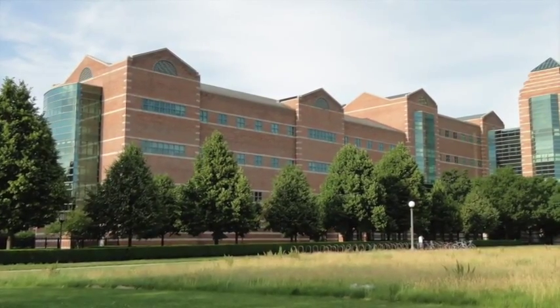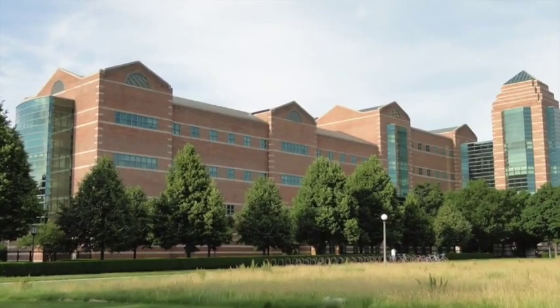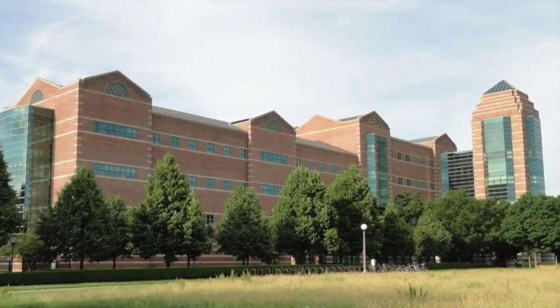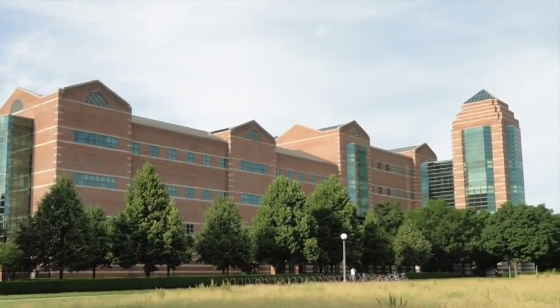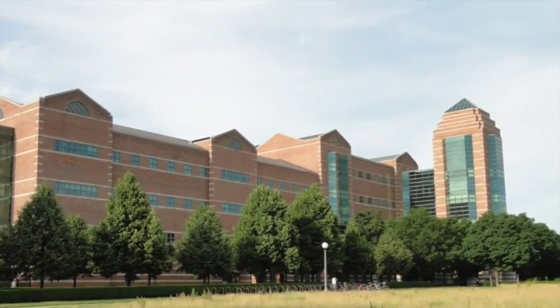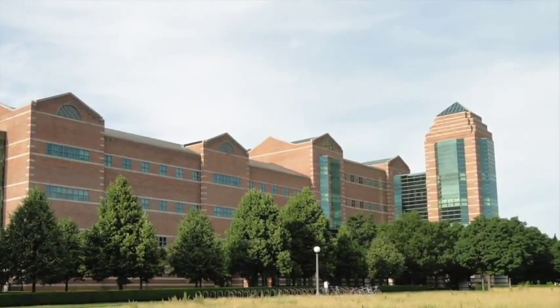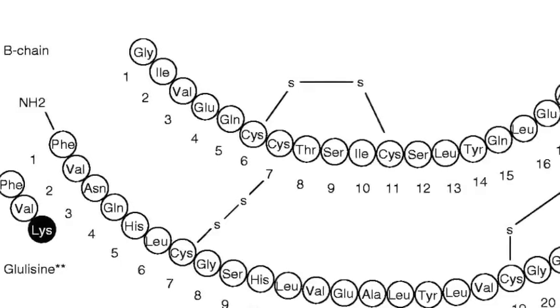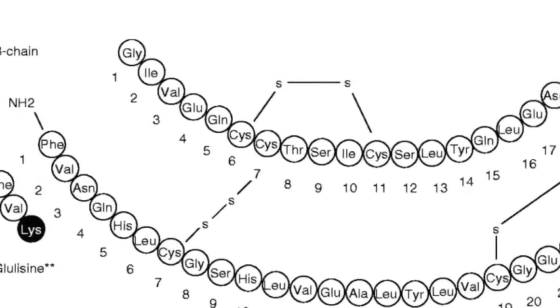In the search for a better substitute for animal insulin, Arthur Riggs and Keiichi Itakura at Beckman Research Institute synthesized the first recombinant insulin in 1978. Before the actual synthesis, the structure of insulin was heavily studied.